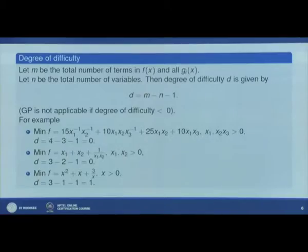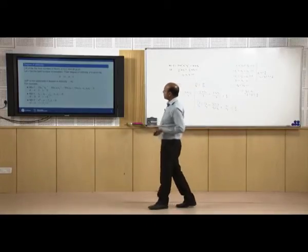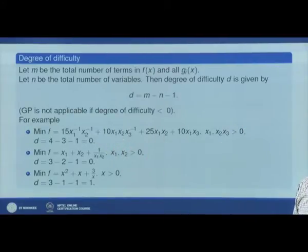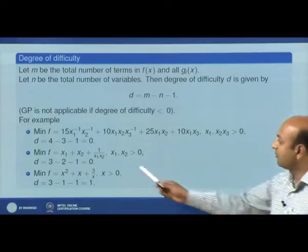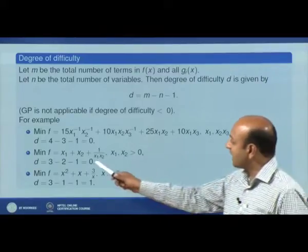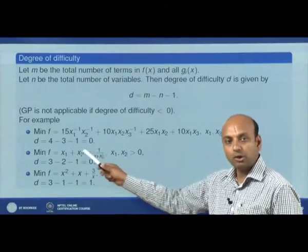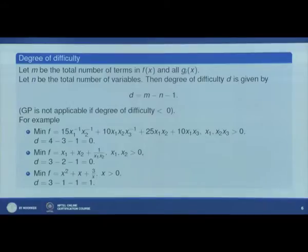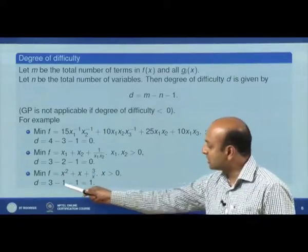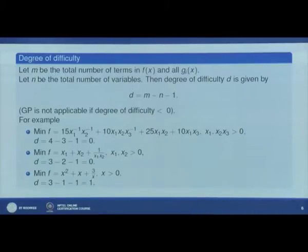If the degree of difficulty is less than 0, GP is not applicable. For a problem with 3 terms and 2 unknowns, d = 3 - 2 - 1 = 0. For a problem with 3 terms and 1 unknown, d = 3 - 1 - 1 = 1, so the degree of difficulty is 1. It is easy when the degree of difficulty is 0 because in that case we obtain a unique solution if it exists, and the right-hand side of the inequality has a fixed value.